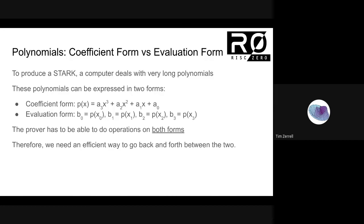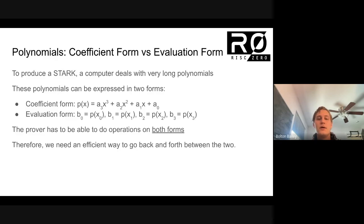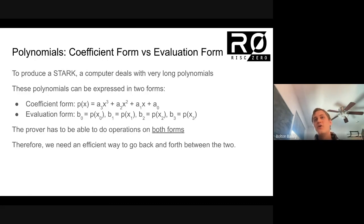If I understood the question correctly: if you just start with the evaluation form, can you evaluate at different points that are not your x0 through x3? Not if you start with the evaluation form directly. That's a good question. One way you could do it is if you had an evaluation form and wanted to evaluate at some place that was not one of the points at which you had evaluated — you could take your evaluation form, convert it into coefficient form, and then evaluate at the point you wanted by multiplying things out.